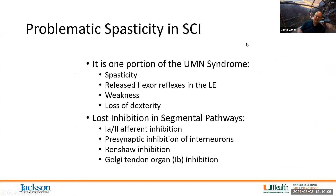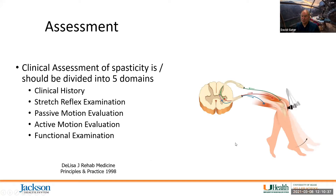Problematic spasticity is part of the upper motor neuron syndrome. You have spasticity — velocity-dependent tone — released flexor reflexes particularly in the lower extremity, certainly weakness, and loss of dexterity. You lose the inhibition we talked about, and you'll see a loss of Renshaw inhibition. All of these ultimately result in hyperreflexia and spasticity.